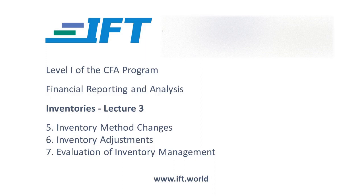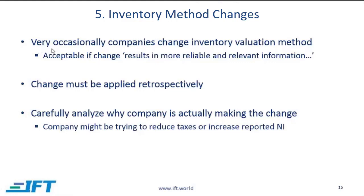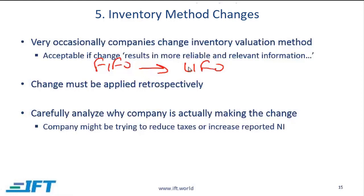Inventory method changes. Very occasionally, companies change the inventory valuation method. For example, a company has been using FIFO and is moving to LIFO. This is acceptable if the company can justify that the change results in more reliable and relevant information. When a company does make this change, the change must be applied retrospectively.